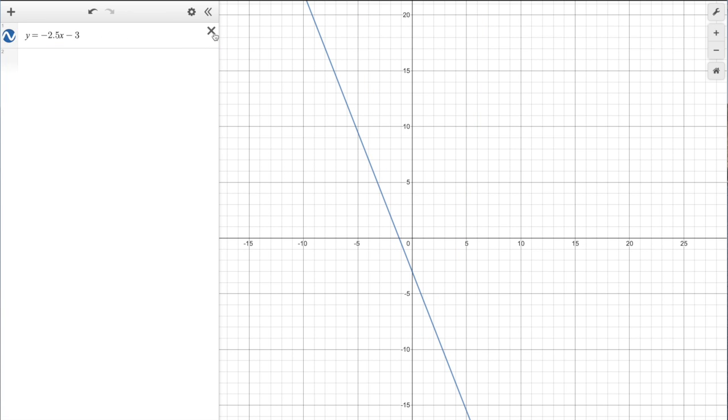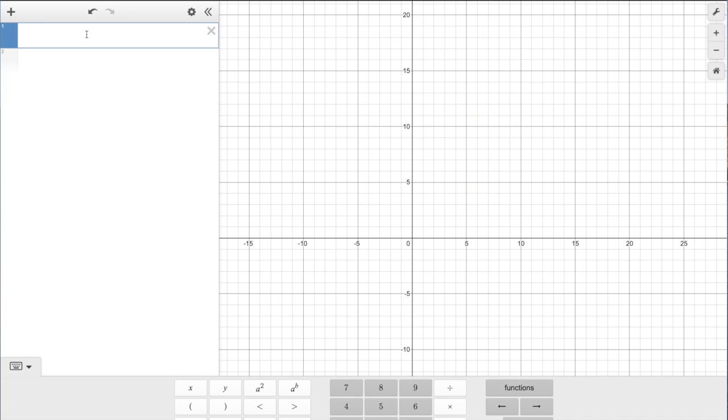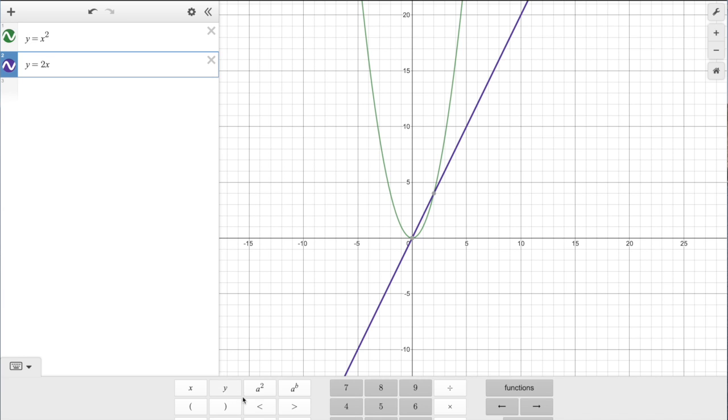But let's do the next question to see the points of intersection on this. So let's get rid of that and that. And let's put in y equals x squared. And then we'll put in y equals 2x. And we'll see where these bad boys intersect. Ooh, they don't. So that tells us there is no solution.